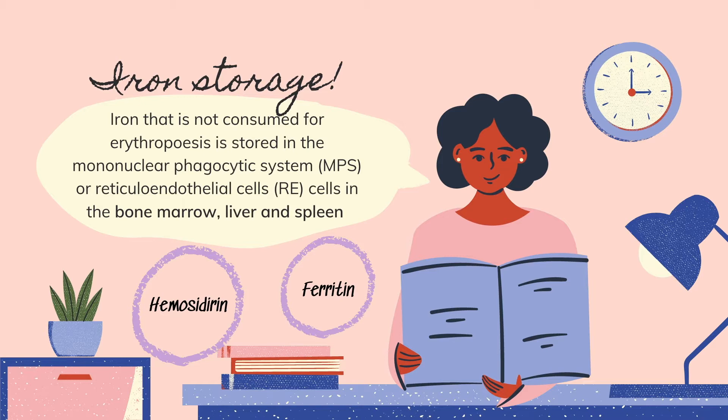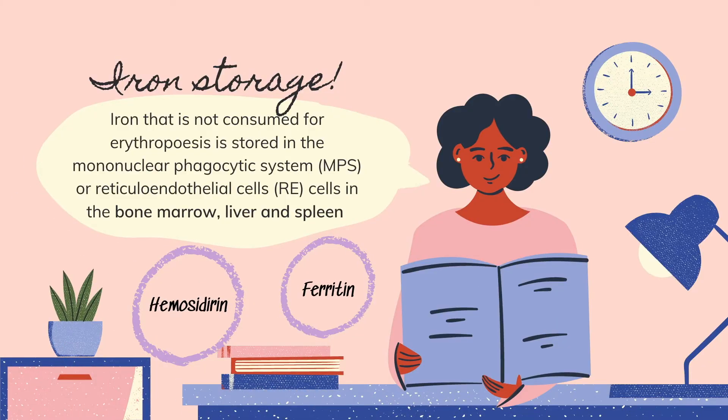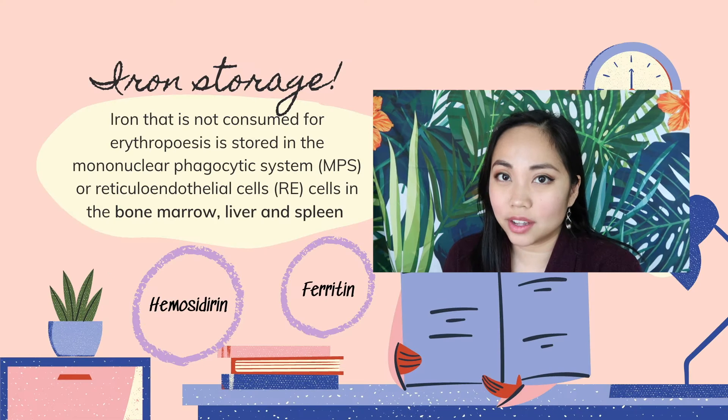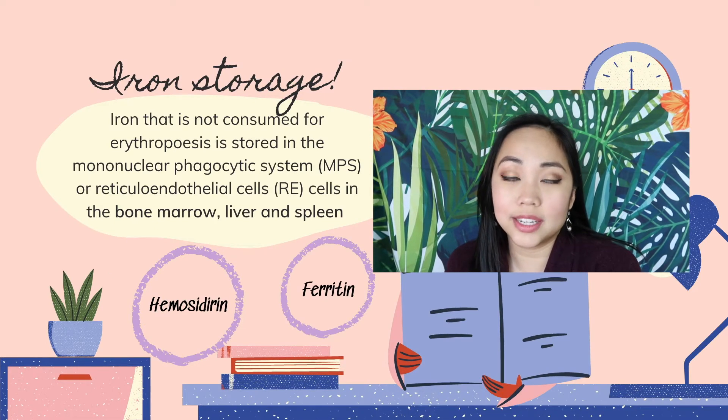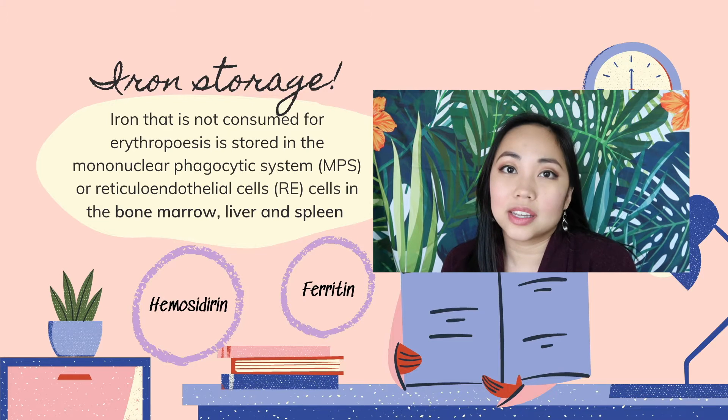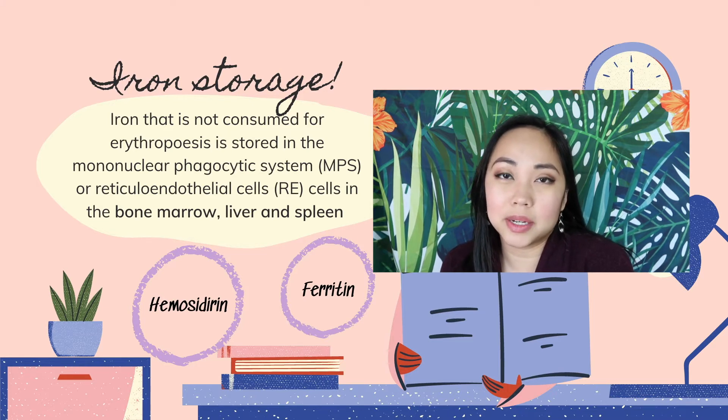As mentioned earlier, only two-thirds of our total body iron is used for hemoglobin synthesis. The excess one-third is shipped off to the MPS — the mononuclear phagocytic cells, or reticuloendothelial cells — of our bone marrow, liver, and spleen, where it is stored as ferritin. Ferritin is water-soluble and easily utilized by the body when needed. The other form of iron storage is hemosiderin, which unlike ferritin, is not easily utilized and is released more slowly.